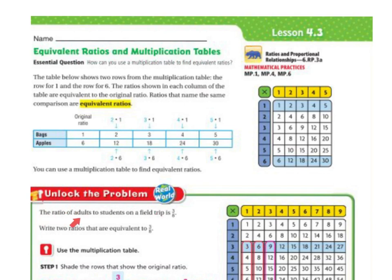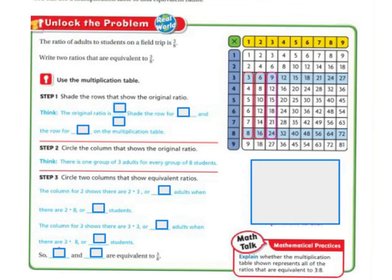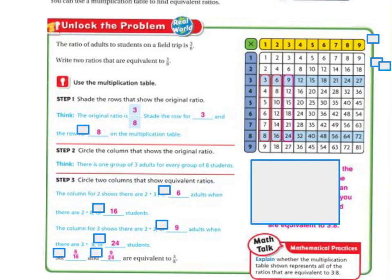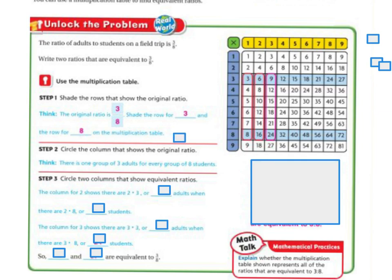Let's unlock the problem. The ratio of adults to students on a field trip is 3 to 8. Use the multiplication table. Shade the row that shows the original ratio. The original ratio is 3 to 8, so shade the rows for 3. If I shade the row for 3, here it is. Here's my row for 3. And the row for 8. So, there's my row for 8.